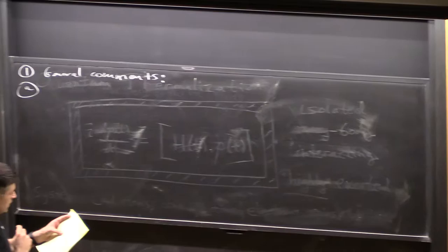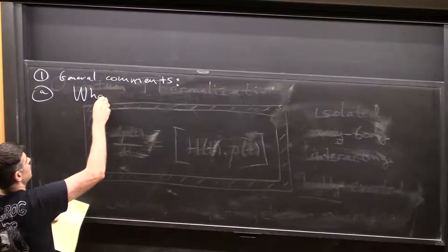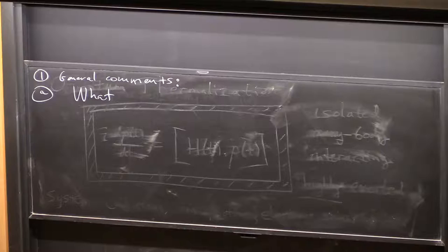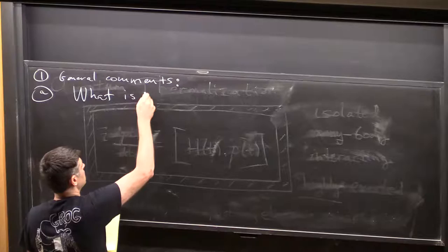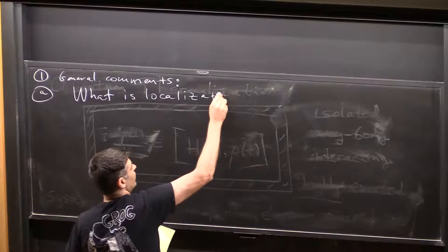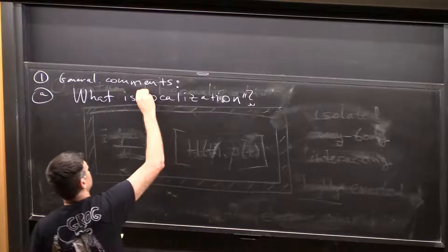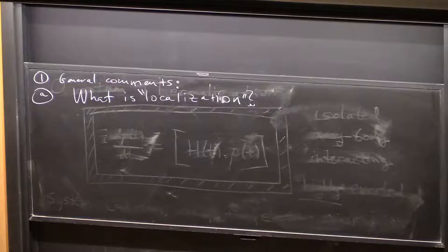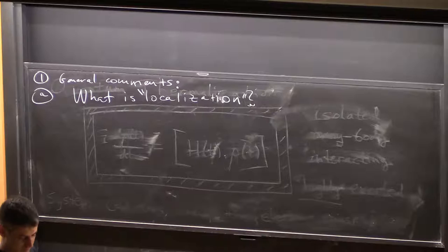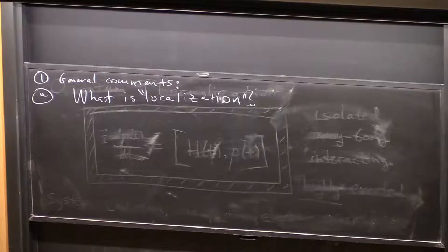One thing that bears discussion is just to have an idea physically, not in the language of sharp definitions, but just physically, what is localization? If you go on Google Scholar and type in localization, you generally do not find necessarily Anderson localization or many-body localization. You find all kinds of localization in biological literature.